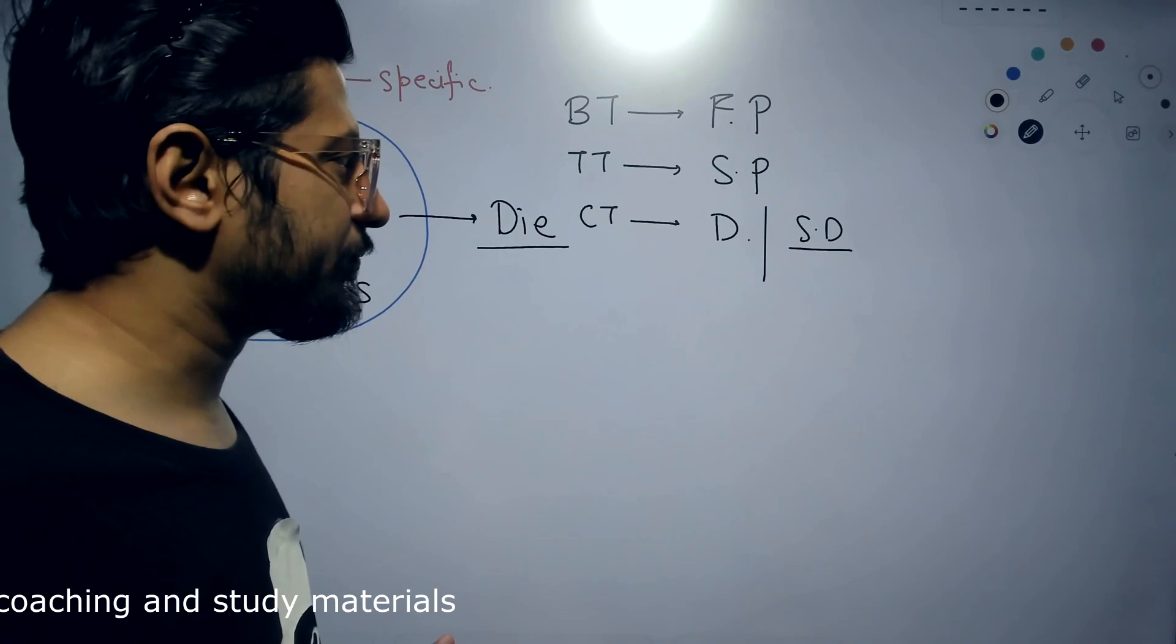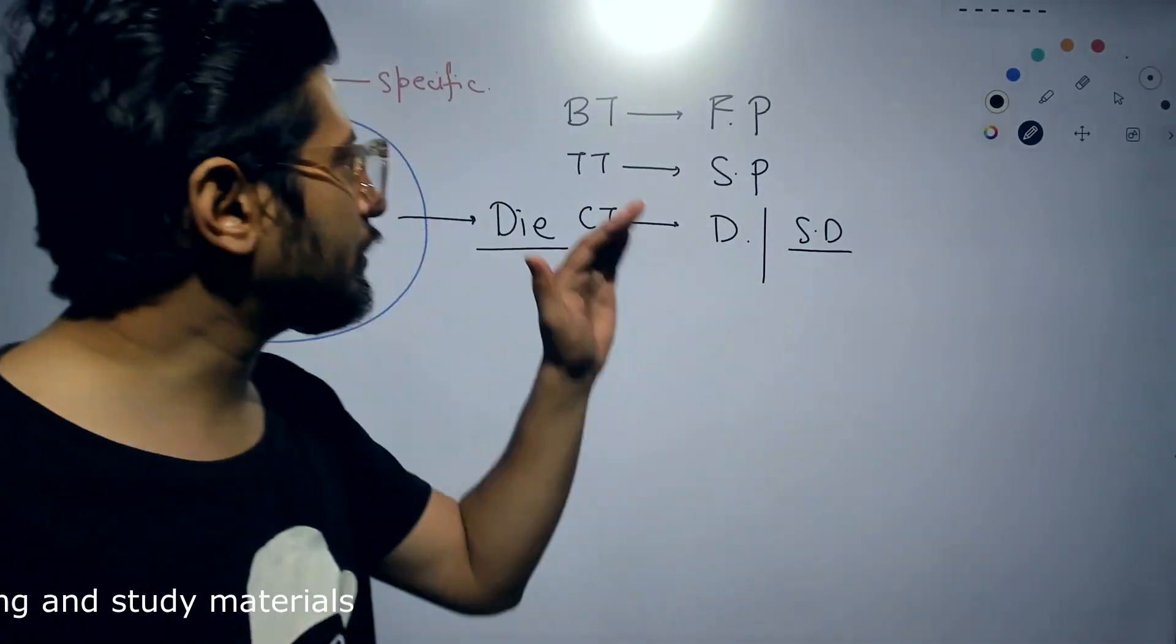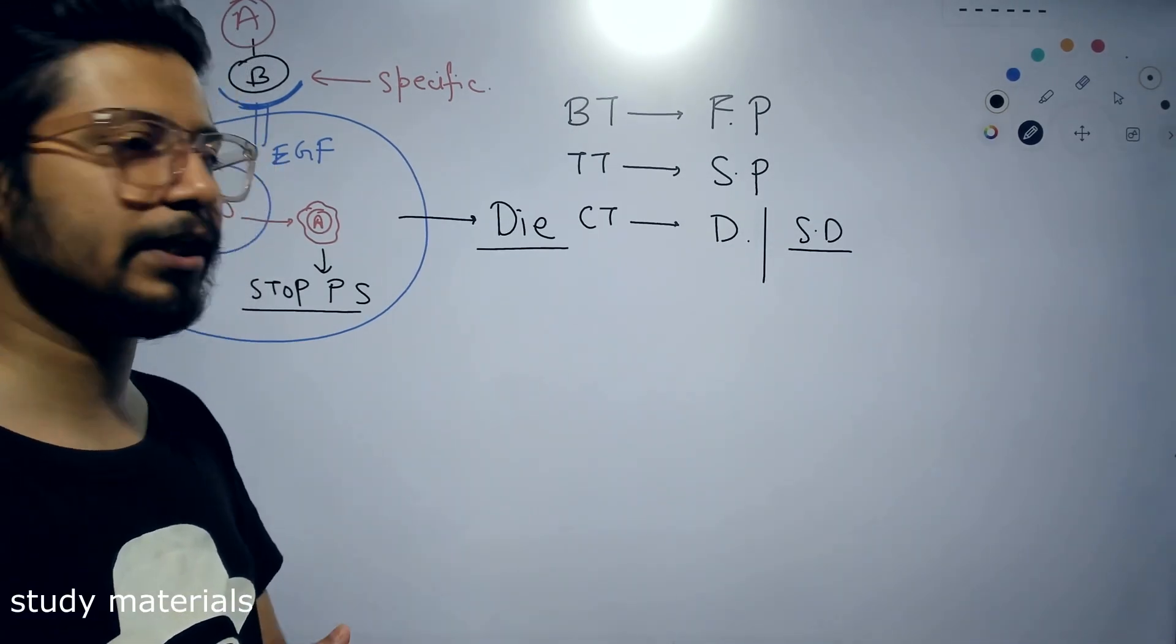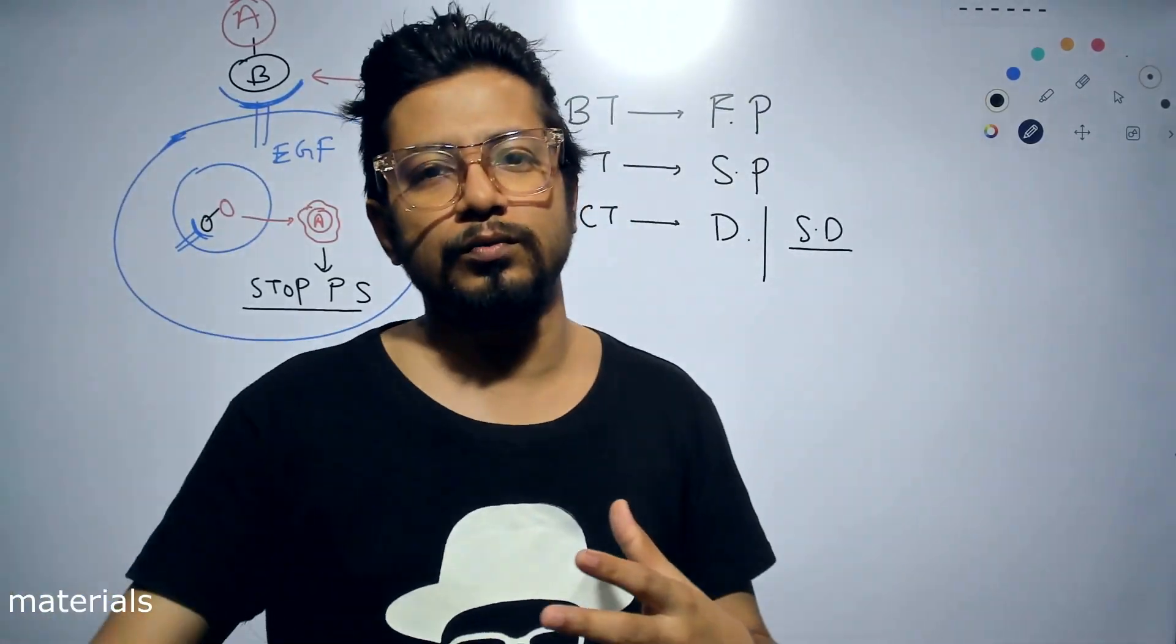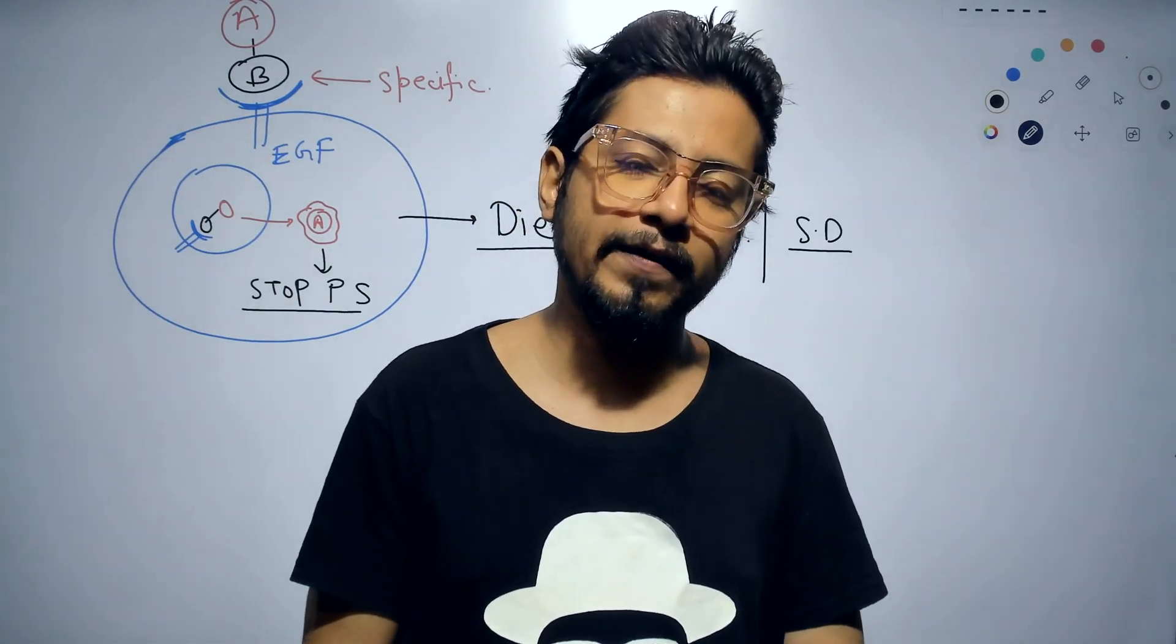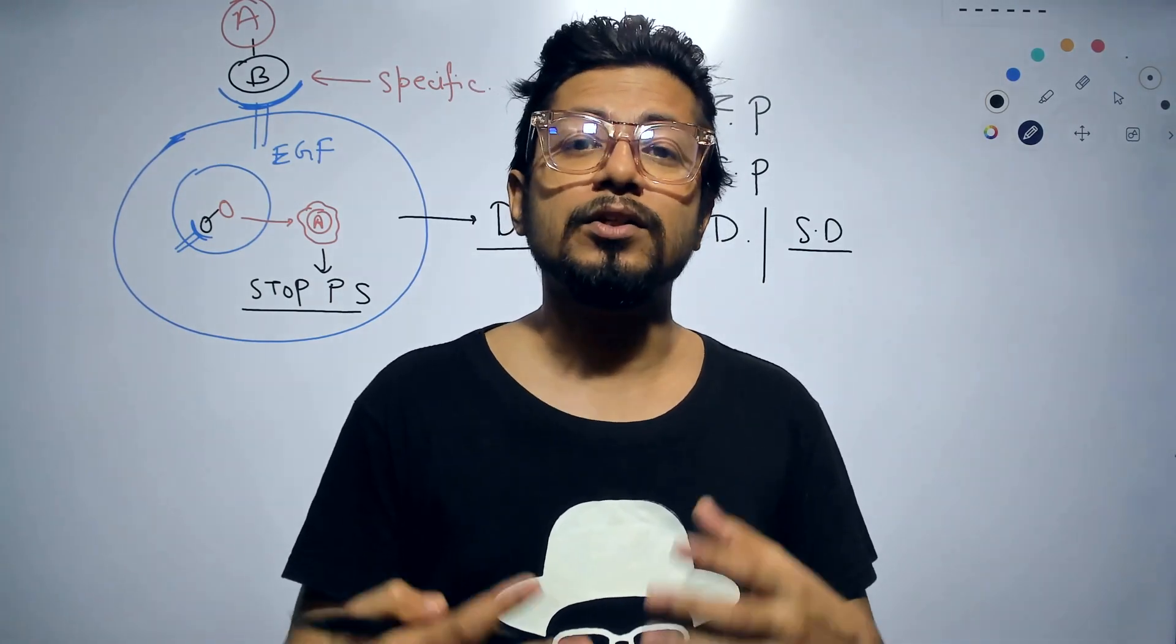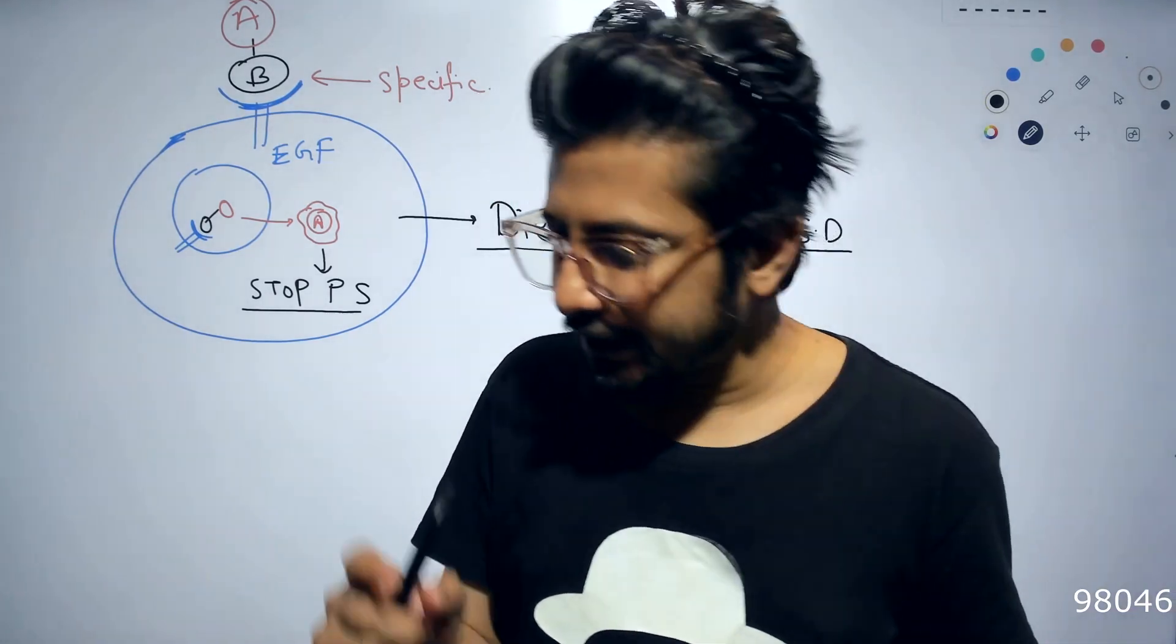Now, if you want to understand more about all these different kinds of toxins, be it botulinum toxin, diphtheria toxin or cholera toxin, I want you to go through the lectures of this series. The next lecture will be based on the botulinum toxin mechanism of action. We will be talking about cholera as well as diphtheria toxin as well. So I want you to go through those lectures to get a clear idea about it. But remember one thing.